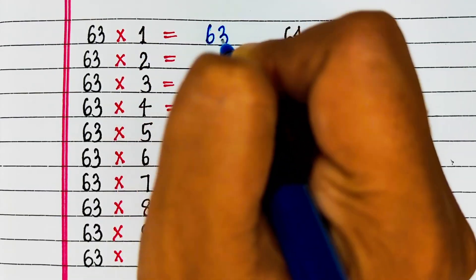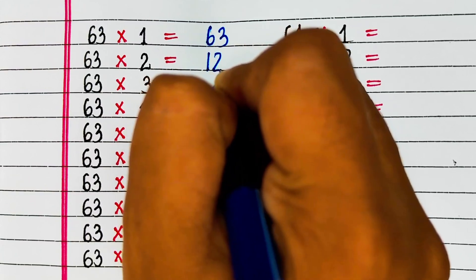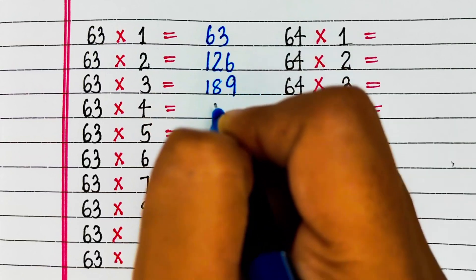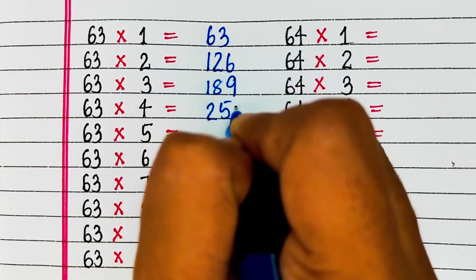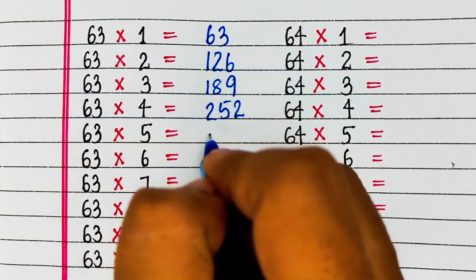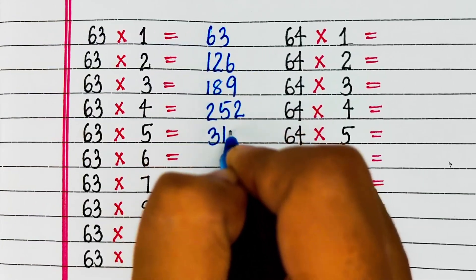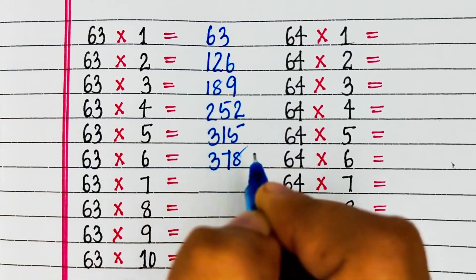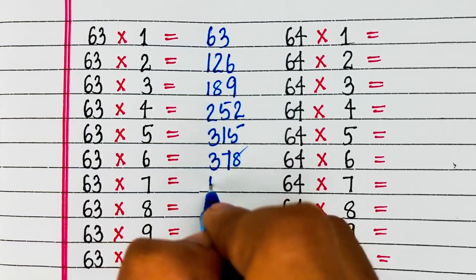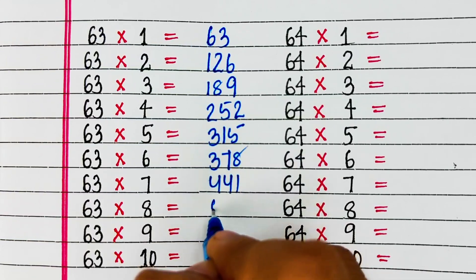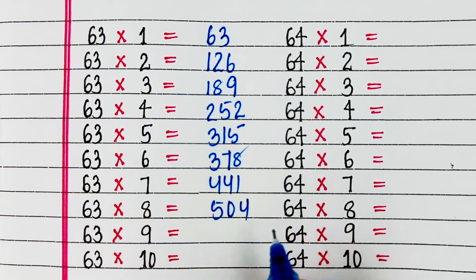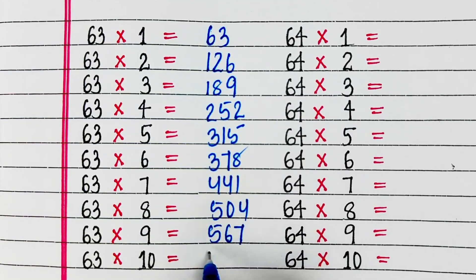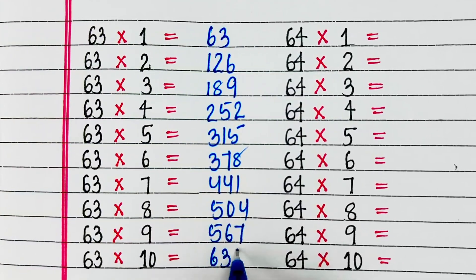Next is table of 63. 63 1s are 63, 63 2s are 126, 63 3s are 189, 63 4s are 252, 63 5s are 315, 63 6s are 378, 63 7s are 441, 63 8s are 504, 63 9s are 567, 63 10s are 630.